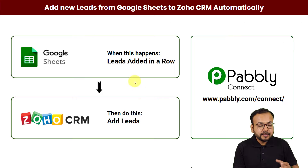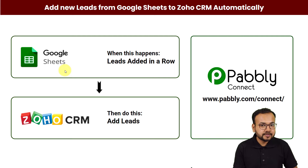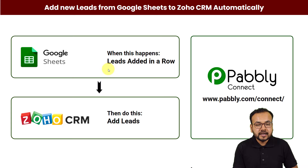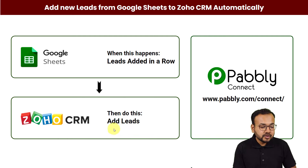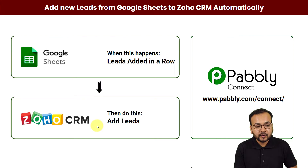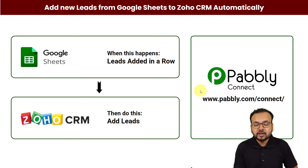Let me show you how this is going to work. This will be the flow of the automation. We have taken the example of Google Sheets to enter the details of leads — you can use any other spreadsheet application like Airtable as well. As and when you enter the data of your lead in a row, it will be added into your Zoho CRM automatically. You can also use HubSpot in place of Zoho CRM. To make this happen we are using Pably Connect, an integration and automation tool, and the best part is anyone can set it up — no coding or programming knowledge required.